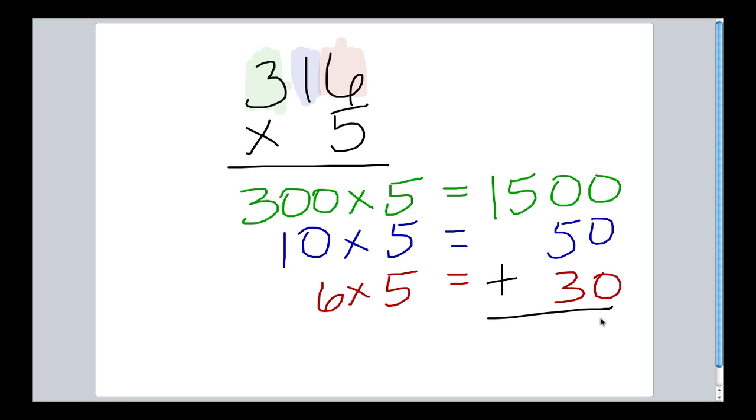Just like in partial sum, one of the keys to being successful with this method is to line up your columns. Notice my ones column here, my tens column, hundreds, and thousands are all lined up, which is going to make my addition really quite simple.